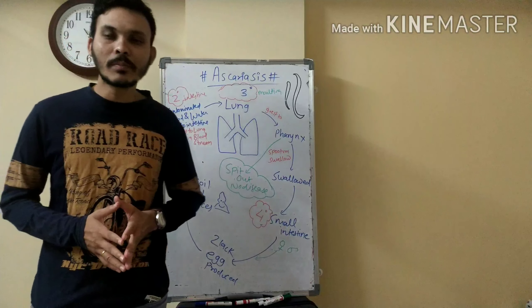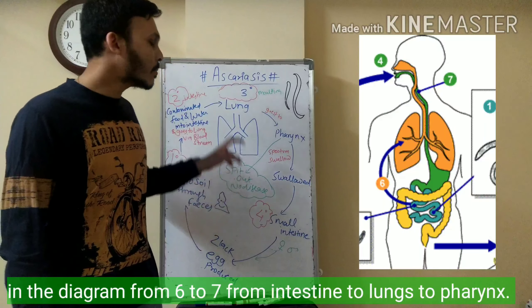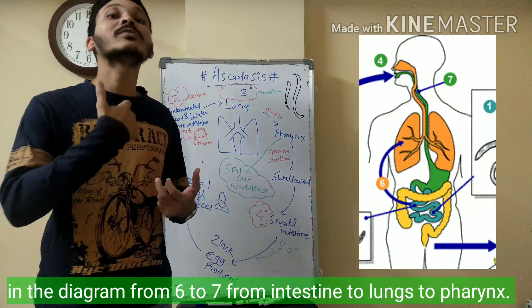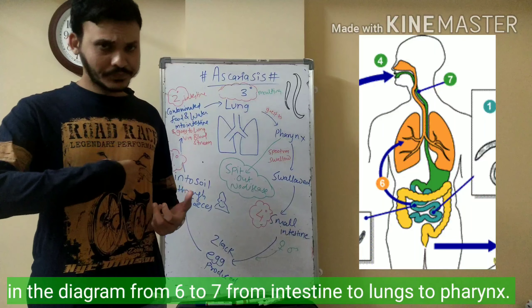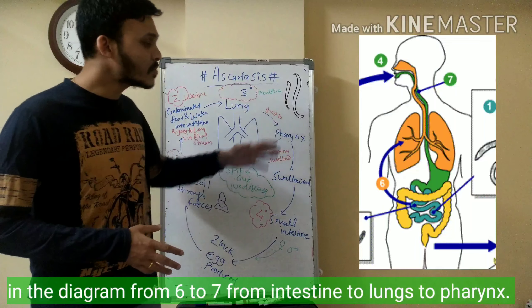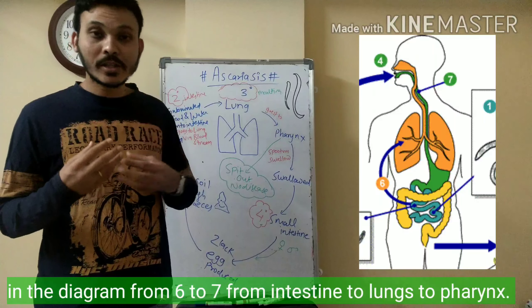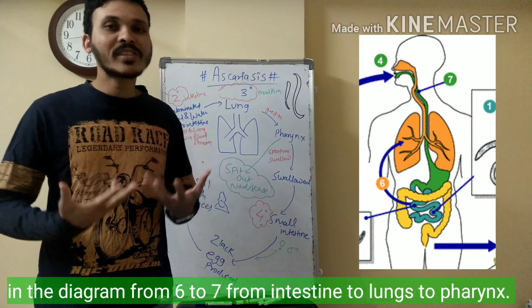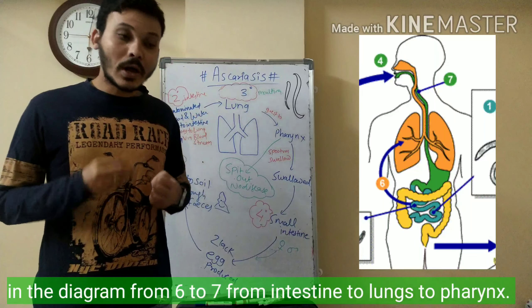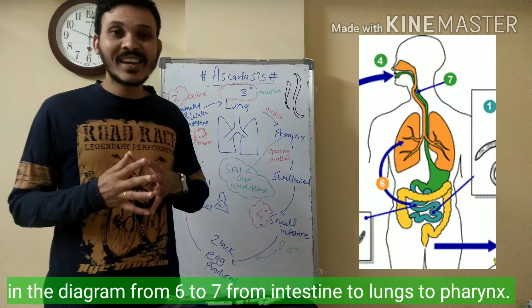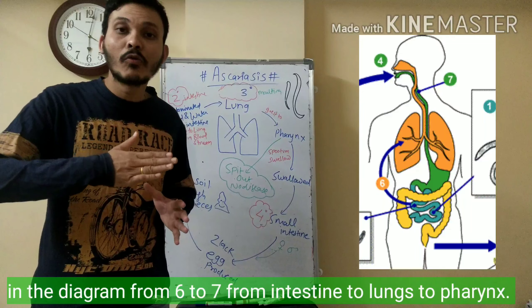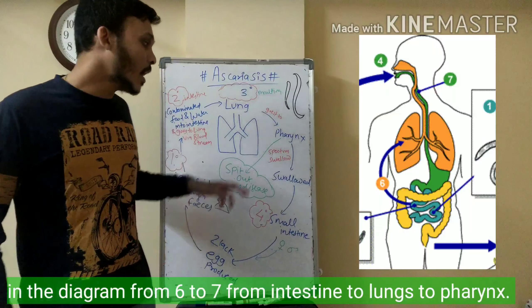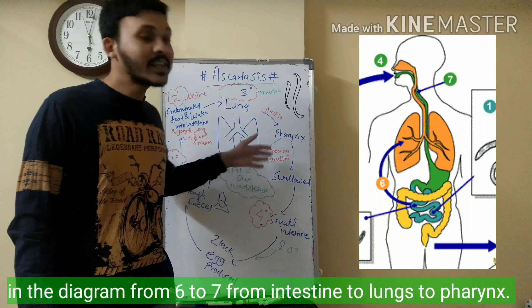It is necessary to complete the life cycle. After the lungs, it is reversed — from the lungs towards the pharynx, then the trachea, and after the pharynx, the third larval stage, you can do two things. If you have sputum and spit it out, the third larval stage will go out of the body. But if you swallow it, it will go back into the intestine.